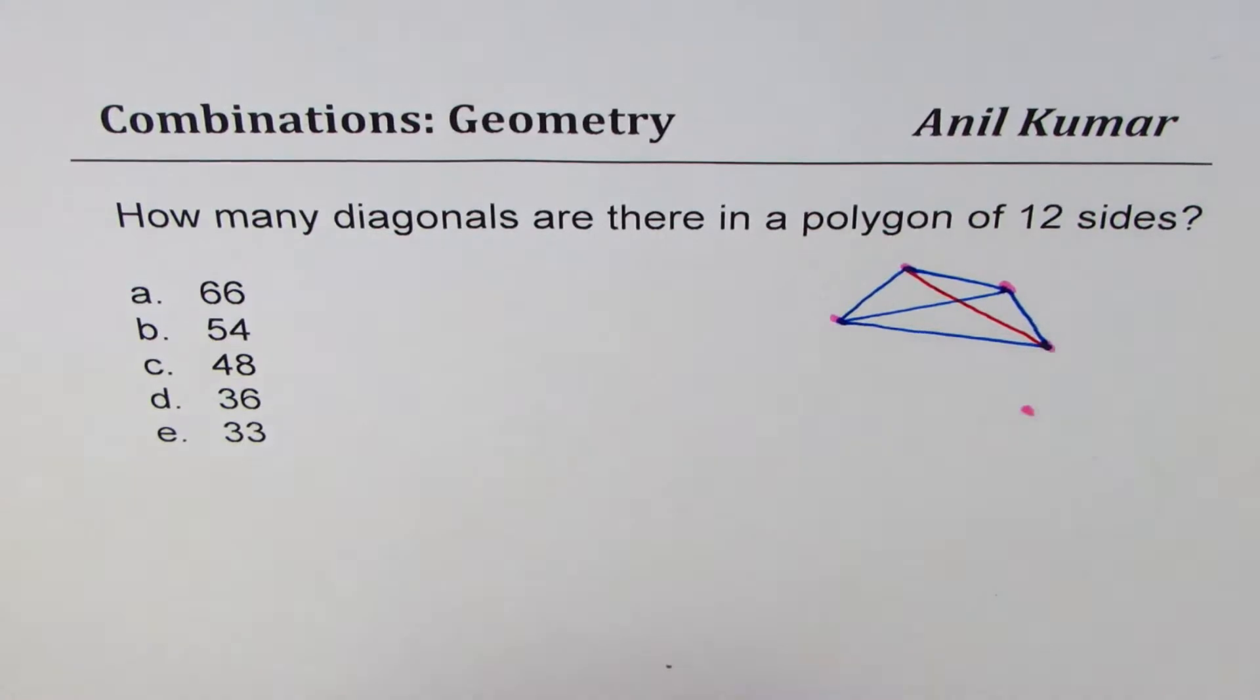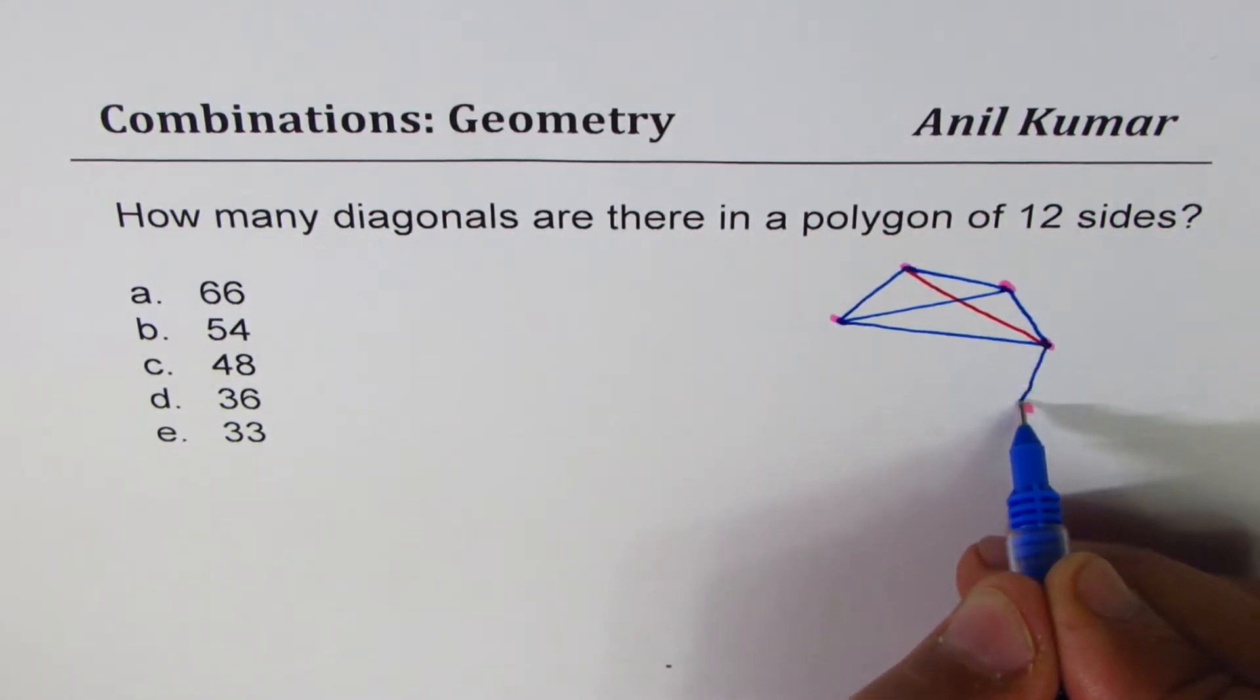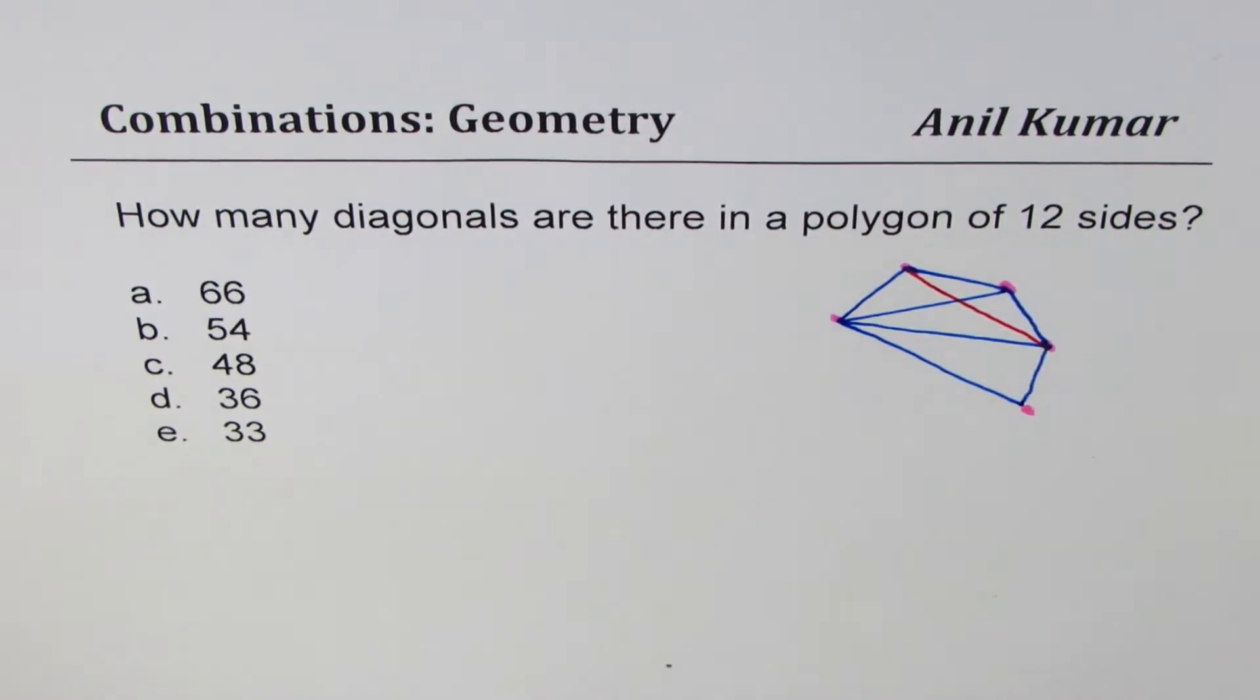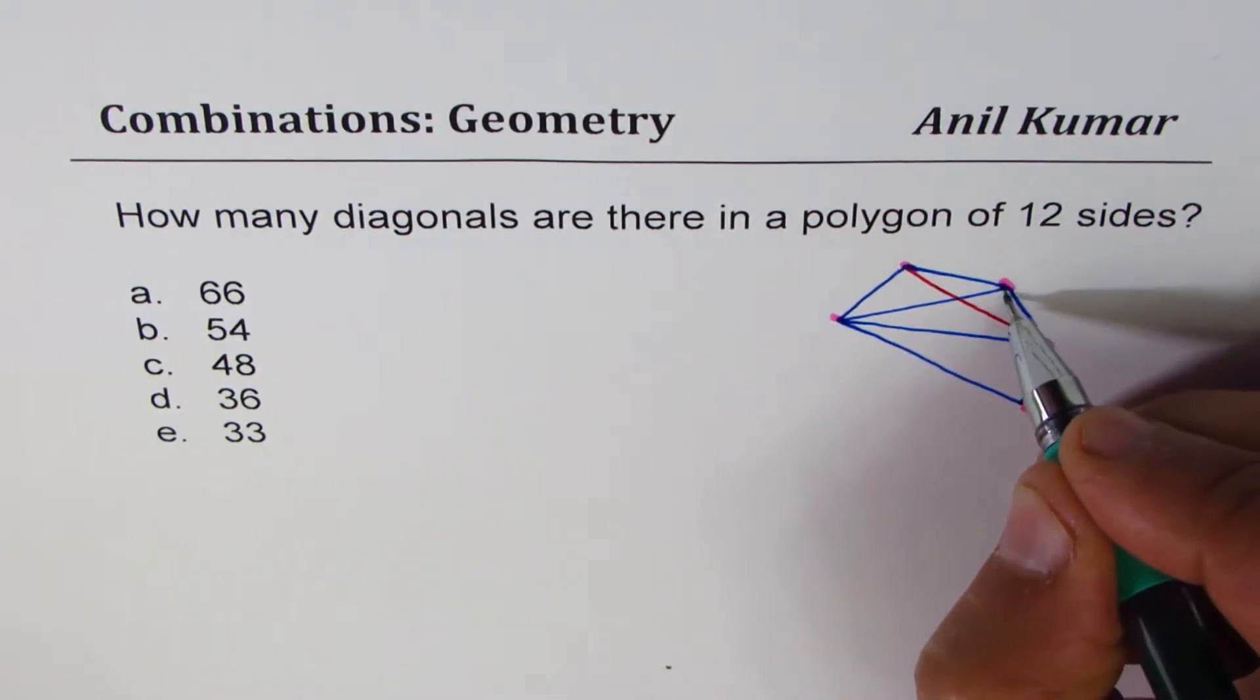What happens with the fifth point? You can actually see the pattern and then also get to the result. With the fifth point, again we add two diagonals. Do you see that? We add these two diagonals to the previous one.